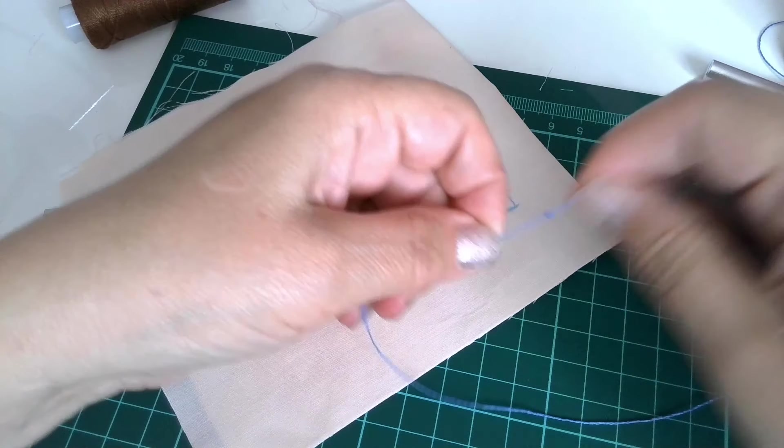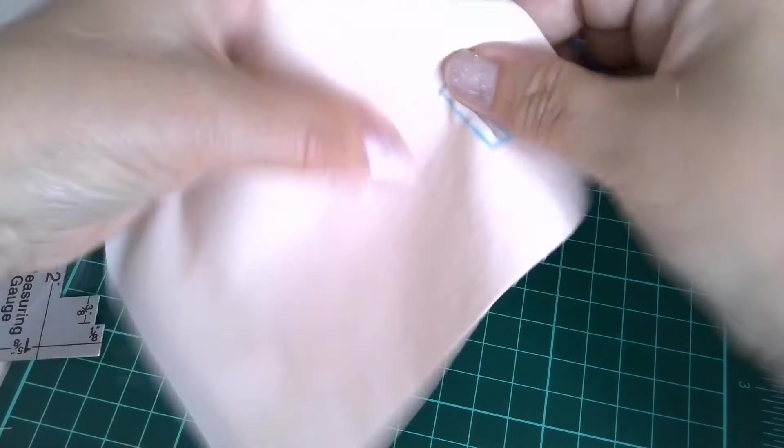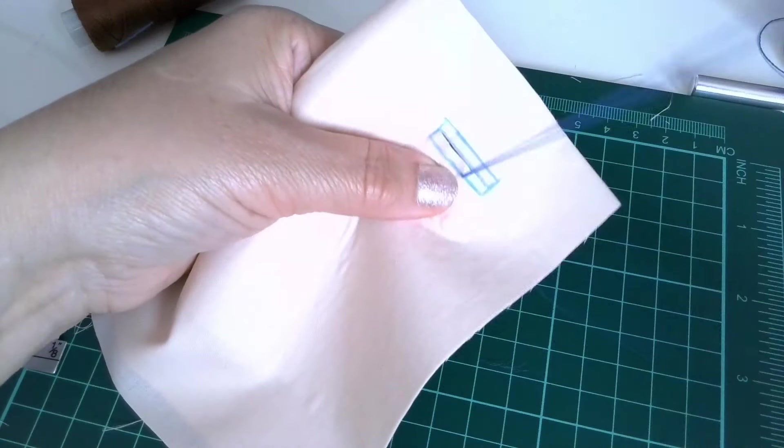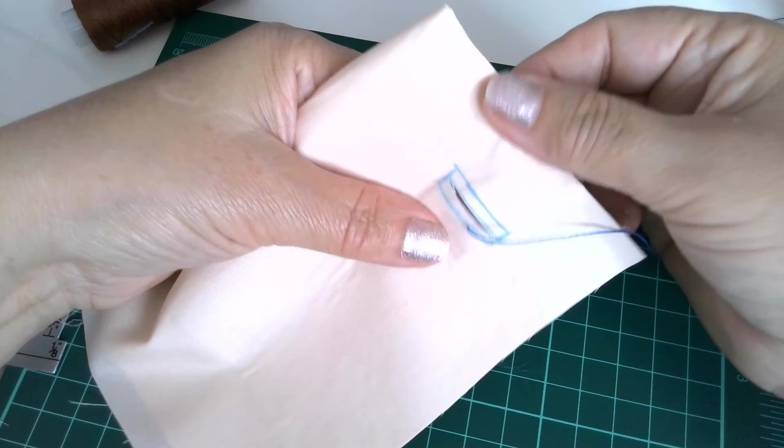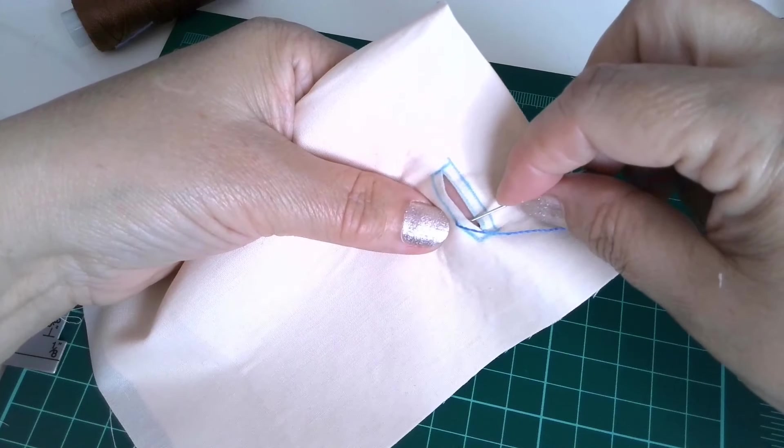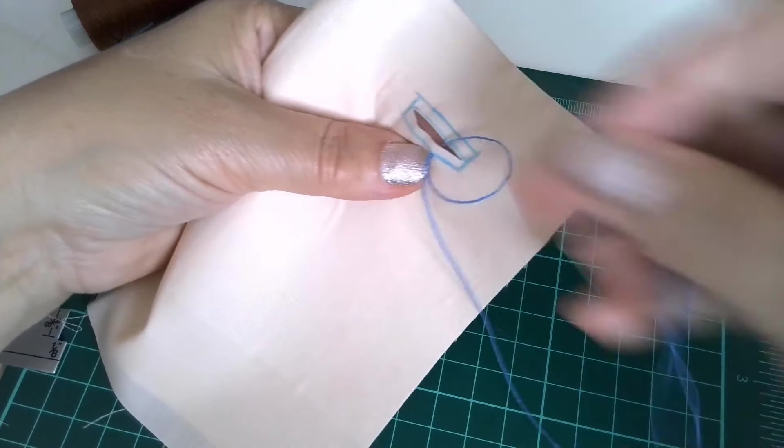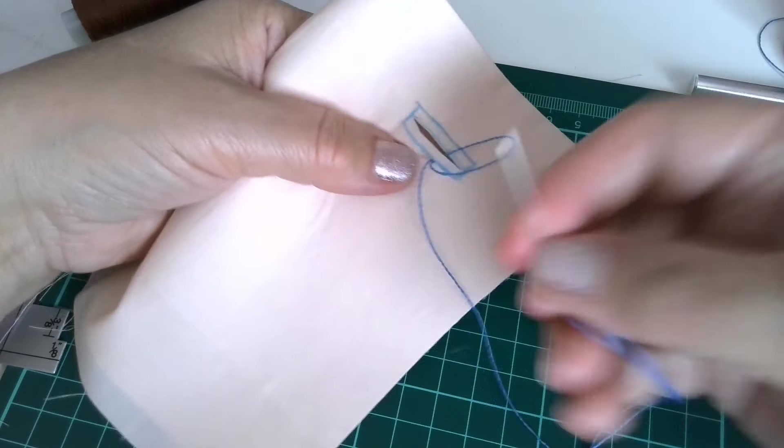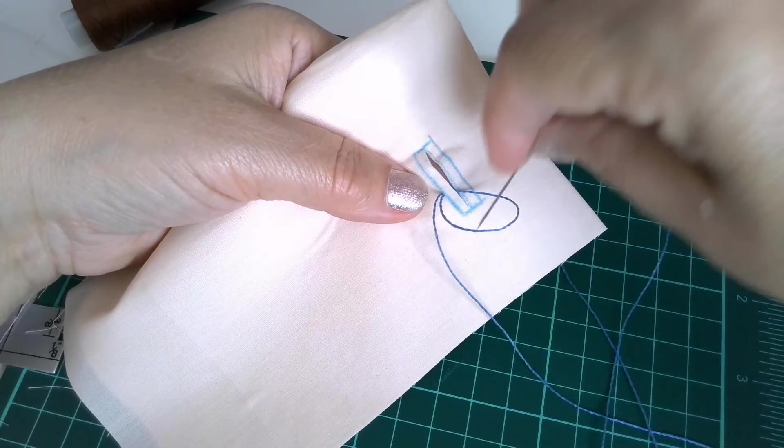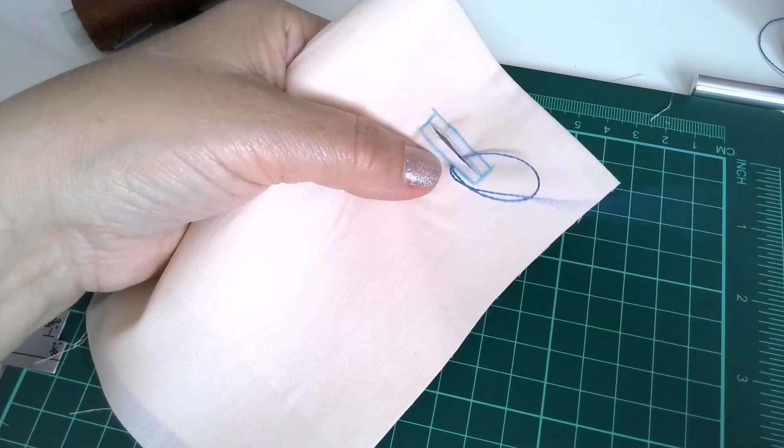Kind of too big. Okay, let's start from here. So the first stitch. I'm doing like this. Loop. I'm going in the loop from down, not from here, but from down.